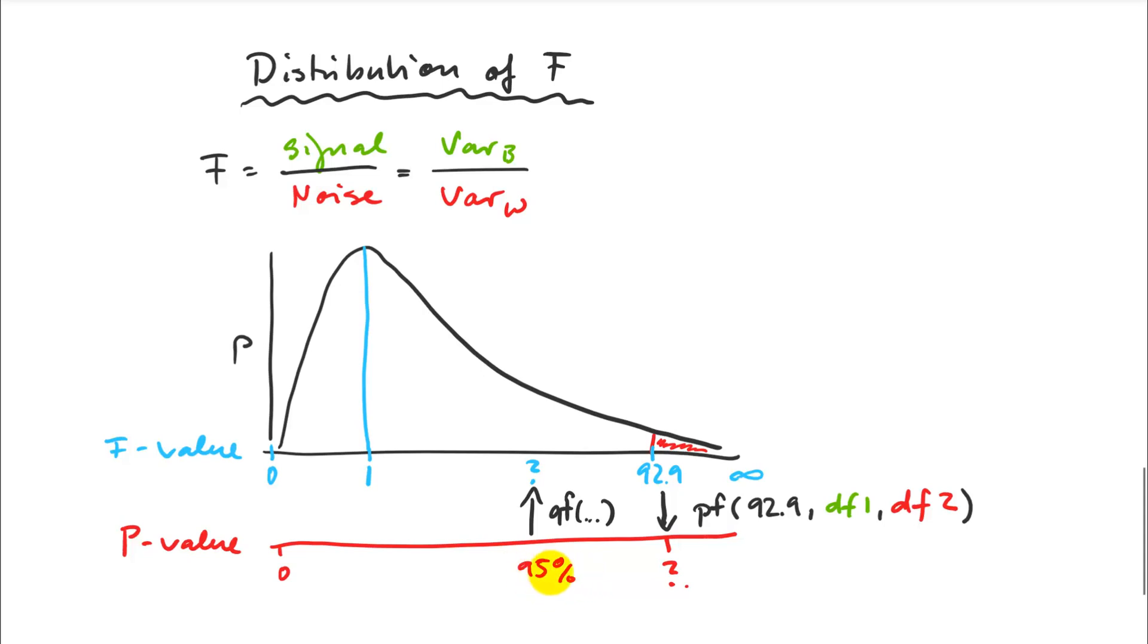So I could say I set an alpha level at 0.05, then my percentile here would be the 95th percentile, and then I can calculate a critical F value to manually calculate my F value. Then I can use that to reject my null hypothesis, but this really only has historical use.